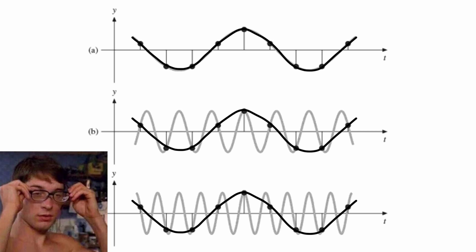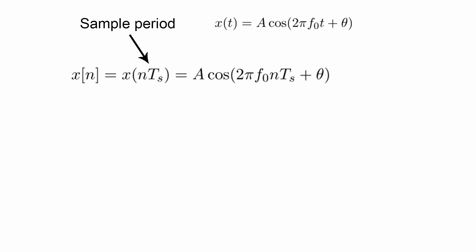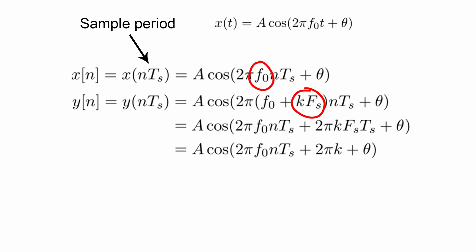Mathematically, if you add any integer multiple of the sample frequency to your sampled signal's frequency, you can reduce the whole equation to the same signal you started with. The set of all these signals that sample to the same signal are called aliases.